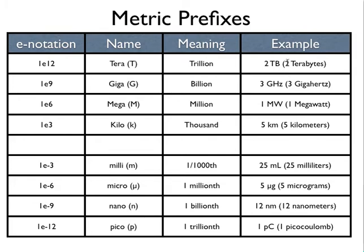So for example, you could have a two terabyte hard drive, a three gigahertz processor, a one megawatt power plant, or five kilometer run. You could have twenty-five milliliters of water, five micrograms of aspirin, twelve nanometers as the size of a circuit on a chip, or one picocoulomb of charge. Notice that these prefixes can be attached to any unit. And that is their true power. They could be used in many different circumstances. So you want to learn these eight.